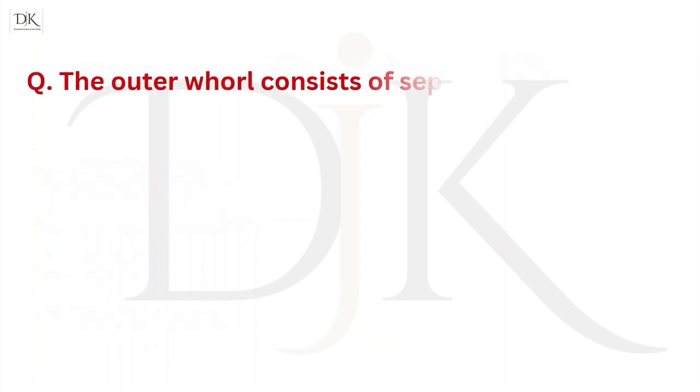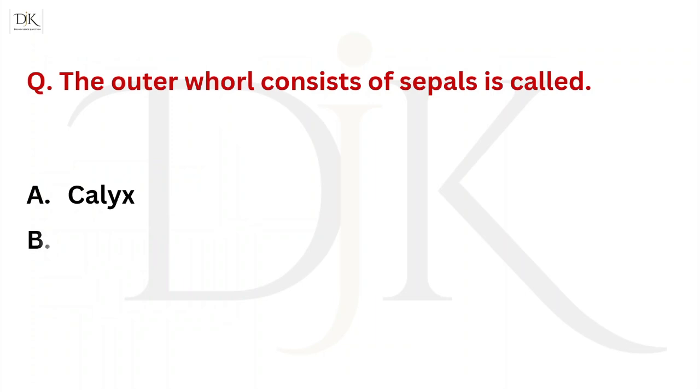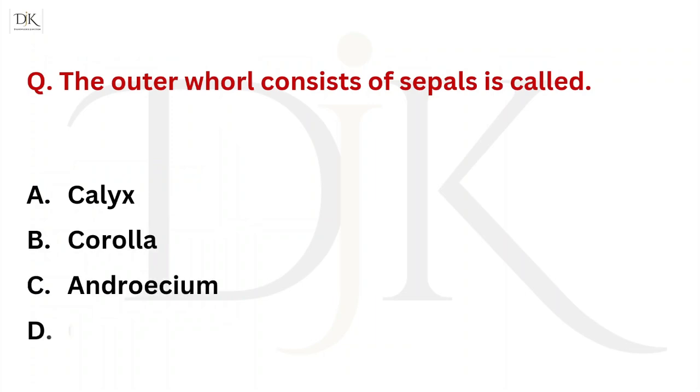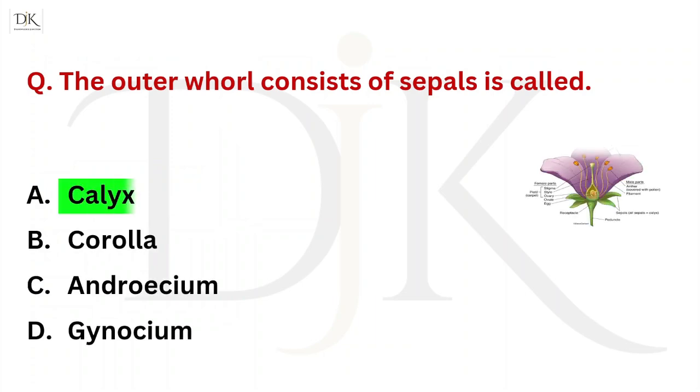The outer whorl consisting of sepals is called? Right answer is calyx.